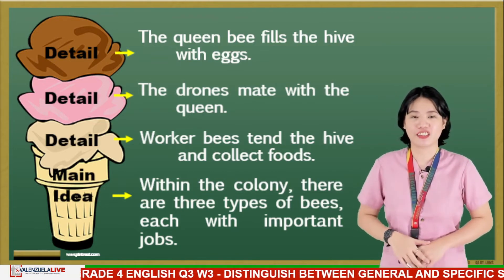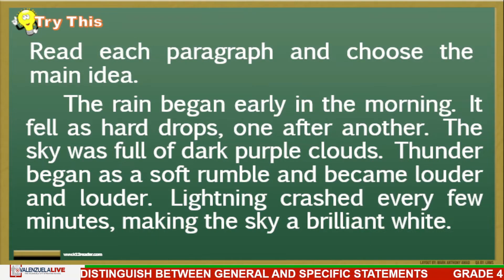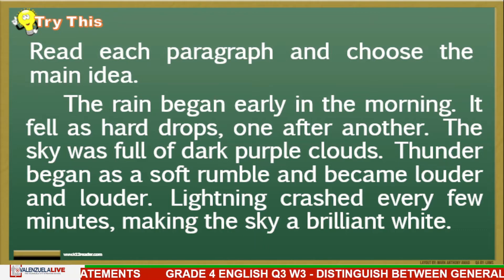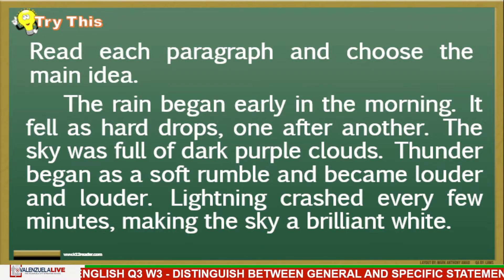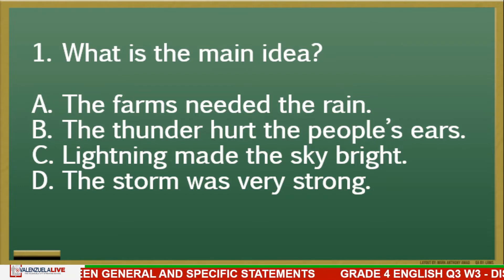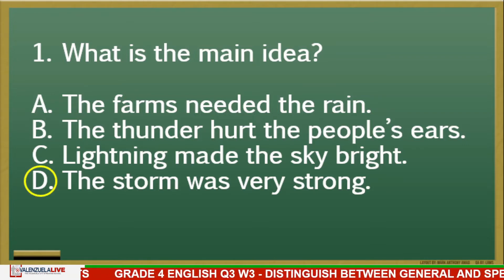Let's test our knowledge. Read each paragraph and choose the main idea. First paragraph: 'The rain began early in the morning. It fell as hard drops, one after another. The sky was full of dark purple clouds. Thunder began as a soft rumble and became louder and louder. Lightning crashed every few minutes, making the sky a brilliant white.' What is the main idea — A, B, C, or D? The answer is letter D: The storm was very strong.